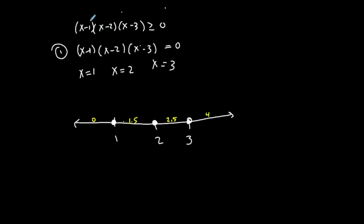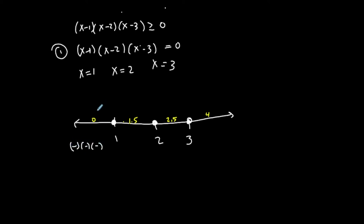I'm going to plug each test point into (x−1)(x−2)(x−3) and I care about the cases that make it greater than 0, since we already dealt with the equal-to portion. Plugging in 0: (0−1) is negative, (0−2) is negative, (0−3) is negative. Negative times negative times negative gives negative. This interval is not part of my solution set because I want outcomes greater than 0, meaning positive.